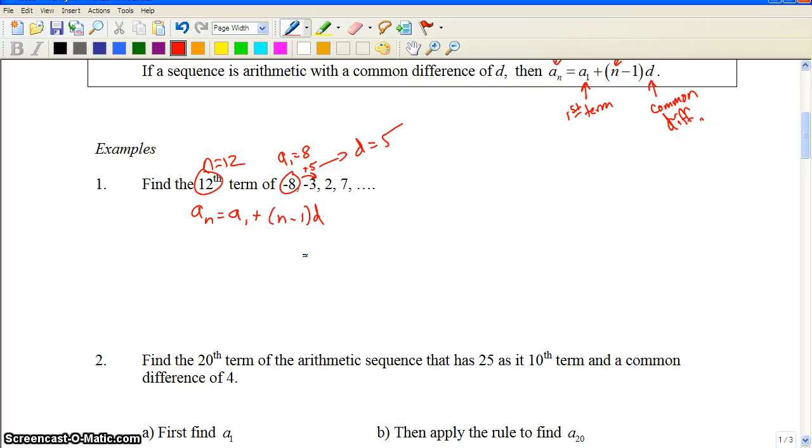n is 12. So in this closed form of the arithmetic sequence, n is 12. So put n in there as 12. So we start doing this. So it's a sub 12 equals. We got n is 12. Fantastic. a sub 1 is negative 8. So put that in there in its spot. d is 5. Negative 8. Can we calculate now what the 12th term is? Just calculate that out.